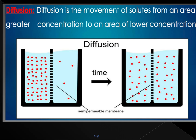When a solution has solid particles dissolved in it, we call it a solute, and the liquid form is the solvent. Coming to the basic principle of diffusion: we have two solutions of different concentrations of solutes separated by a semipermeable membrane. Diffusion occurs because of the movement of solutes from an area of higher concentration to an area of lower concentration, driven by an electrochemical gradient across the semipermeable membrane. The exchange occurs until the concentration on both sides becomes equal.